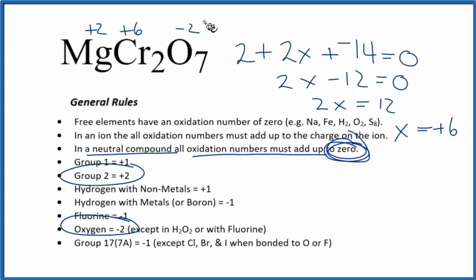One last thing, you could have recognized that the Cr2O7, that's the dichromate ion, has an overall charge of two minus, and then you could have worked with that ion to find out oxidation number. Either way, you get the same number.